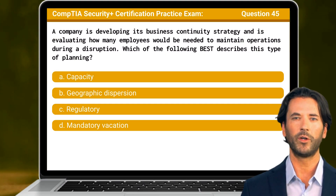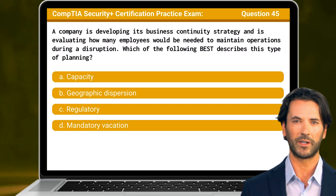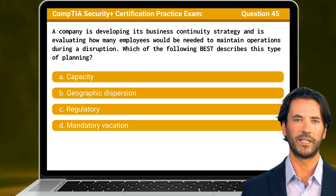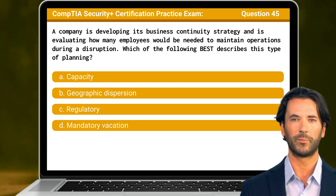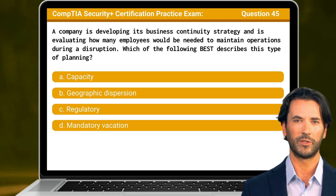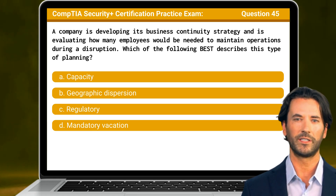Question 45. A company is developing its business continuity strategy and is evaluating how many employees would be needed to maintain operations during a disruption. Which of the following best describes this type of planning?